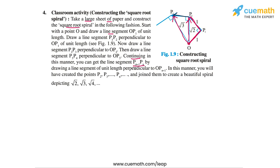Continue in this manner. In general you can get the line segment PN-1 PN by drawing a line segment of unit length perpendicular to OPN-1. When P1, P2, P3, P4 and so on are joined, they create a beautiful spiral.